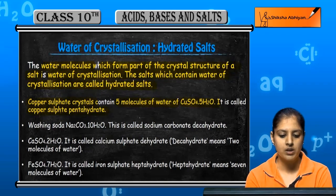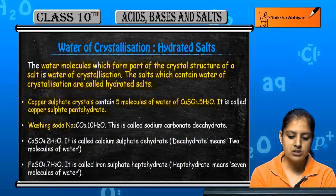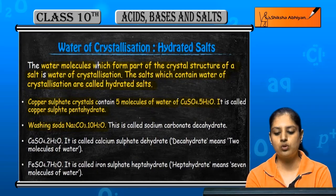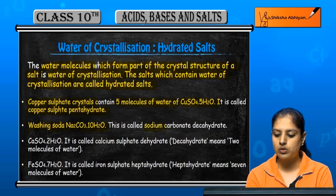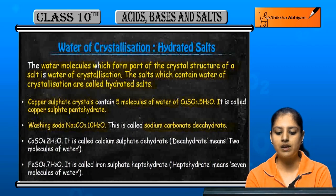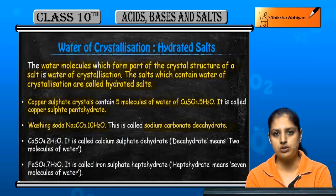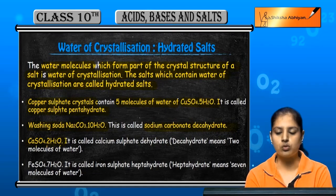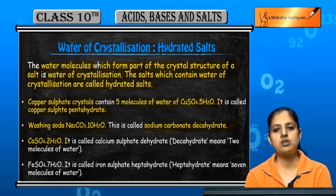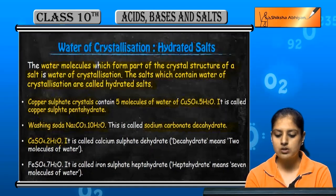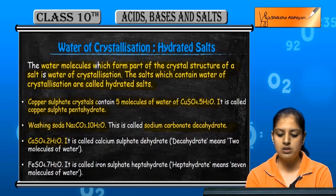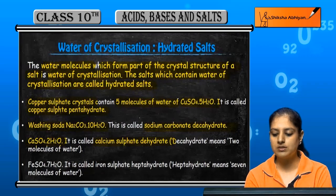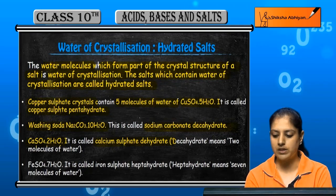Similarly, washing soda is Na₂CO₃·10H₂O and it is called sodium carbonate decahydrate, as it contains 10 molecules of water of crystallization. Calcium sulfate is a dihydrate, meaning it contains two molecules of water of crystallization.